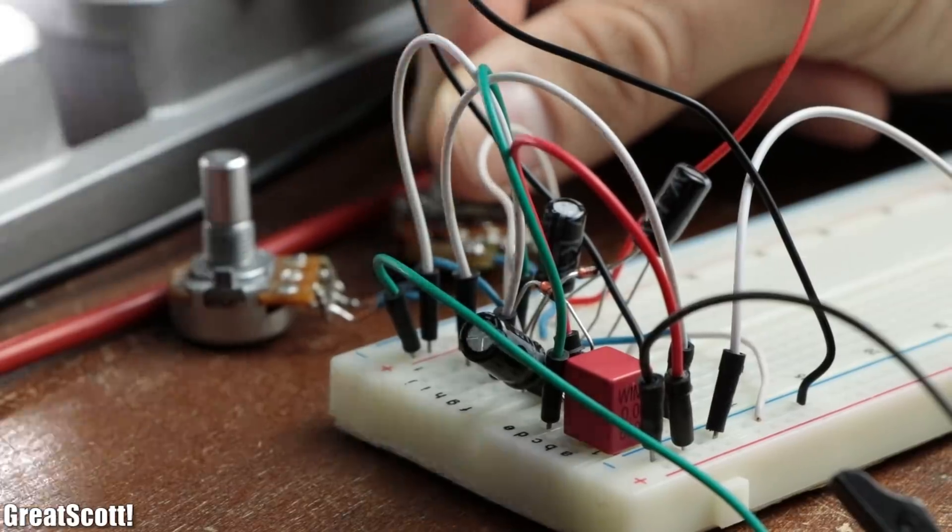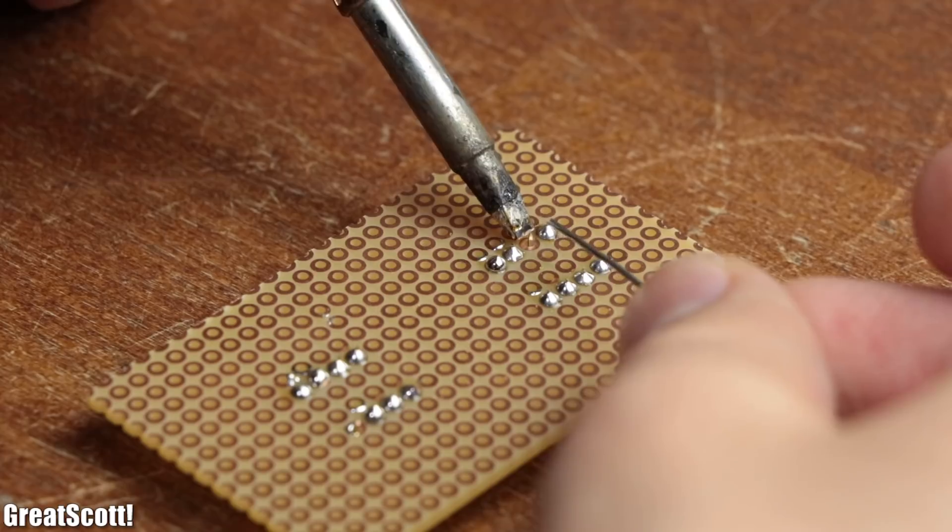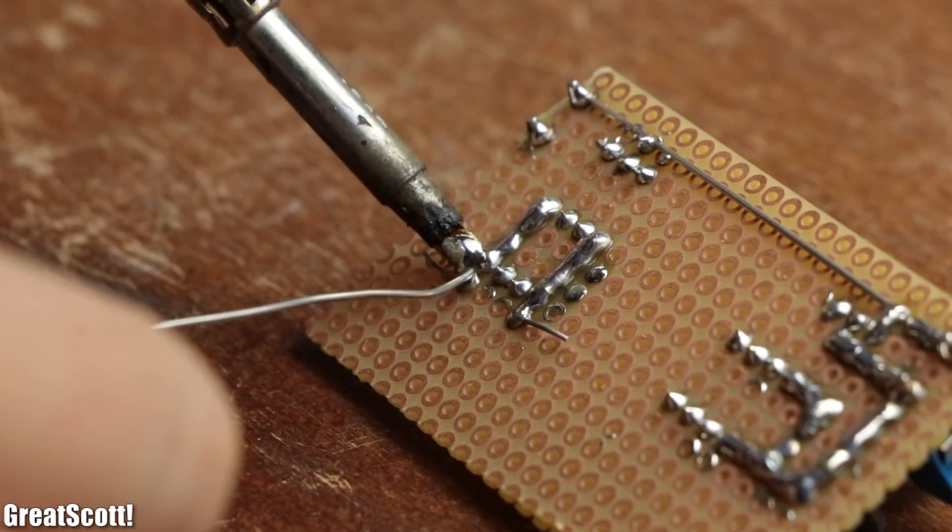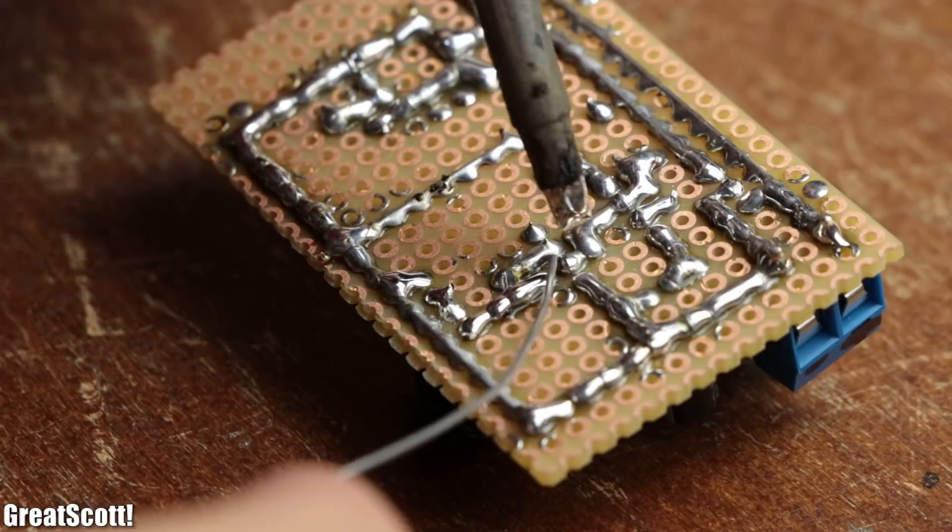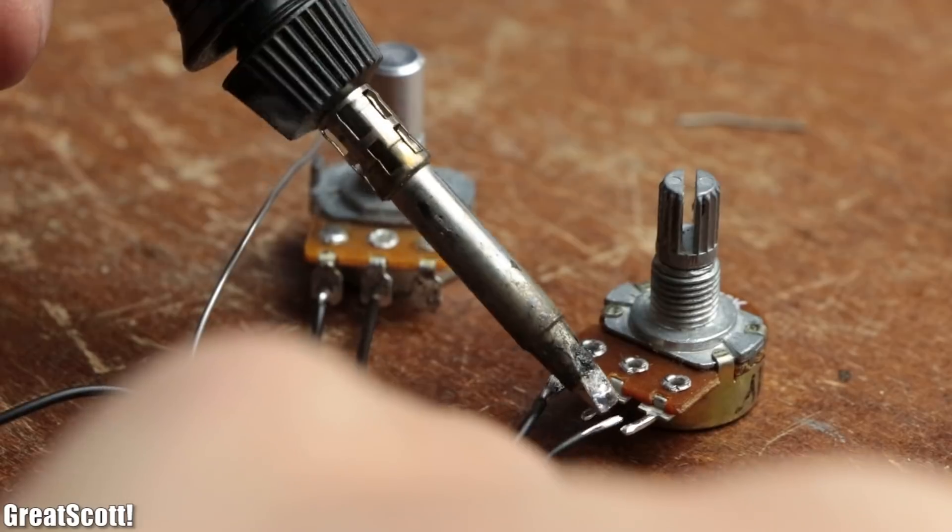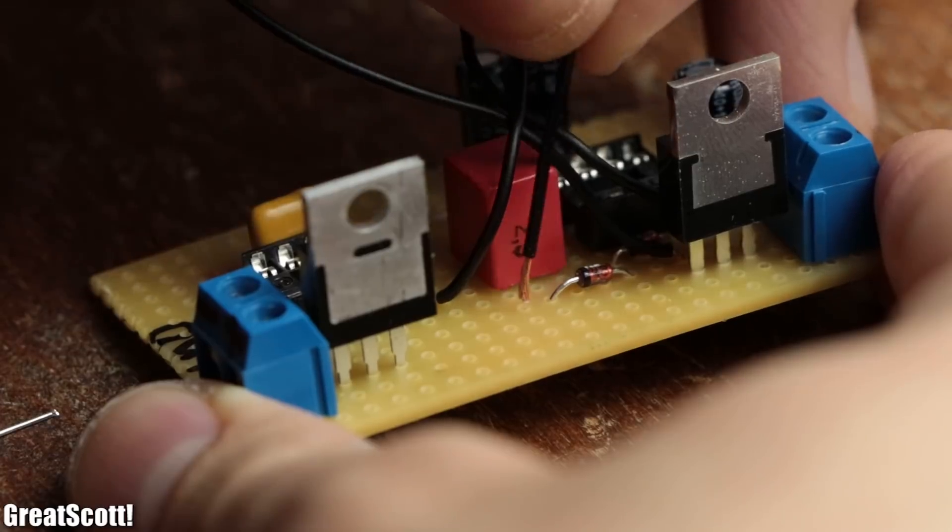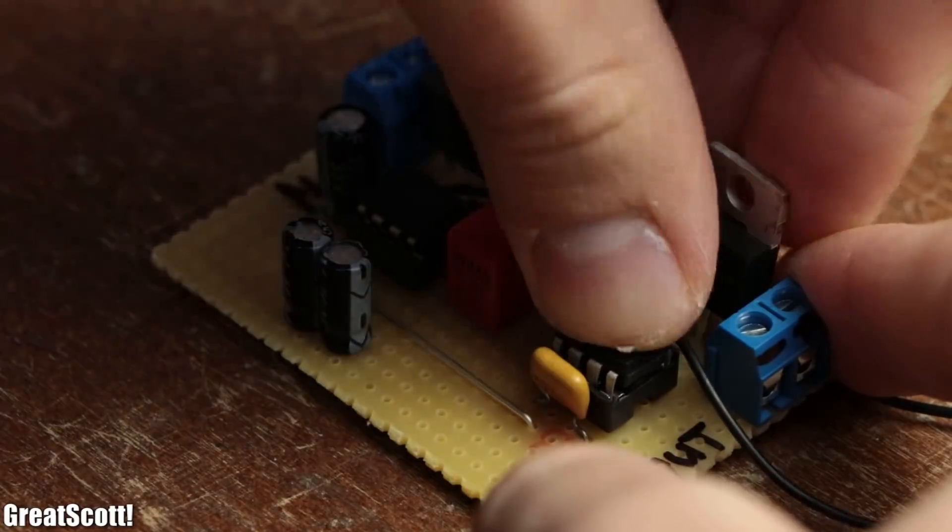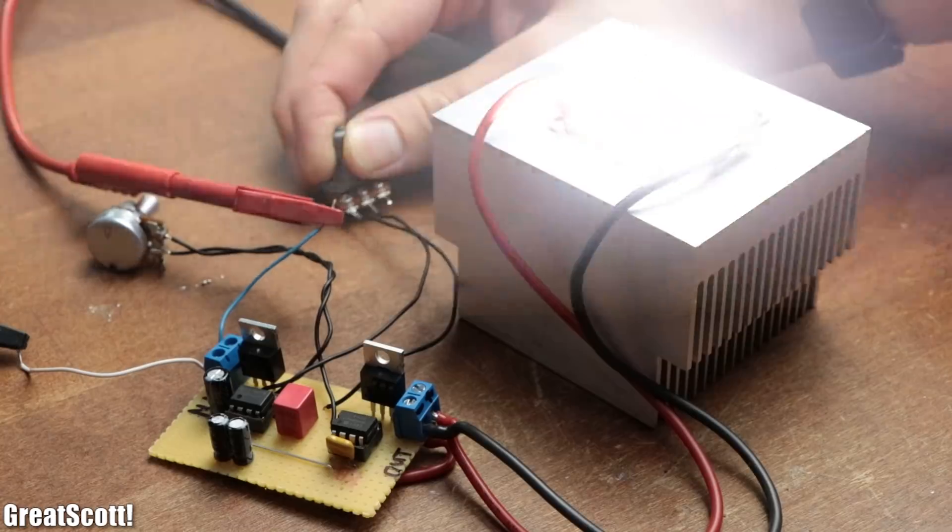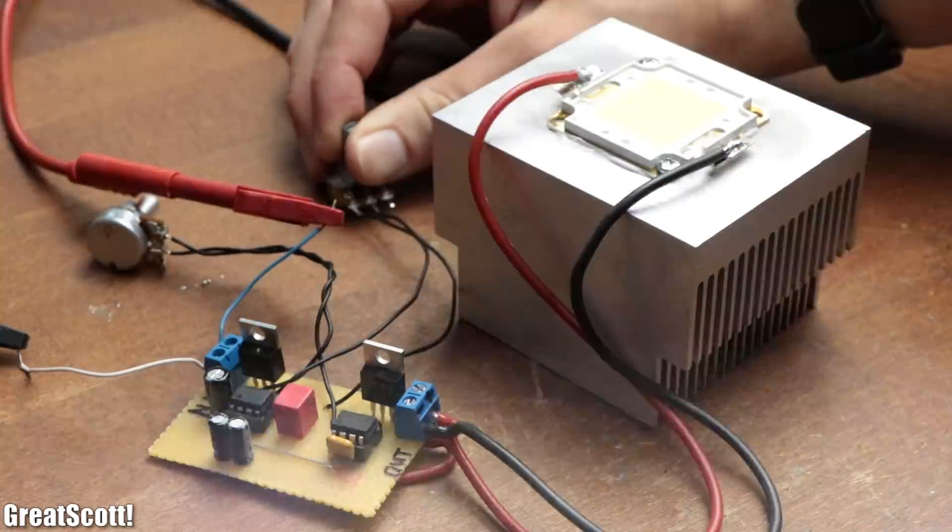So after I was sure that the circuit did work without any problems on the breadboard, I soldered all of its components onto a perfboard and afterwards to one another according to the schematic. But I did not solder the potentiometers to the perfboard because I will have to mount them somewhere else later on. And once the circuit was complete, I did a small test with it and moved on by choosing a different LED light source.